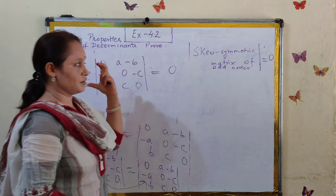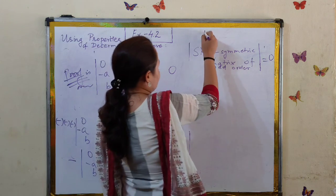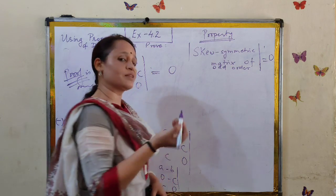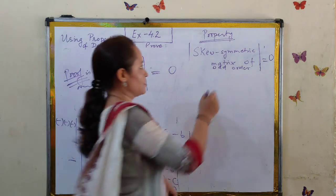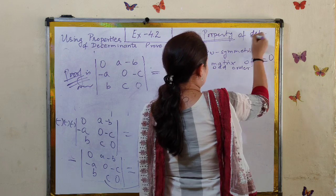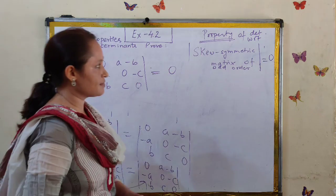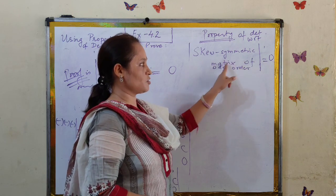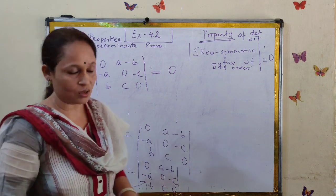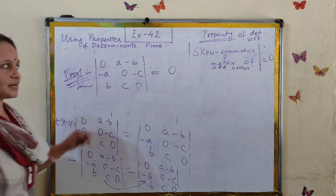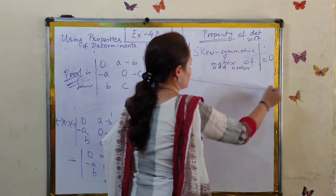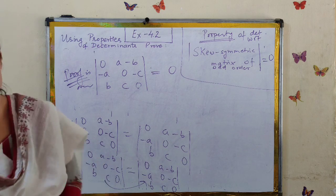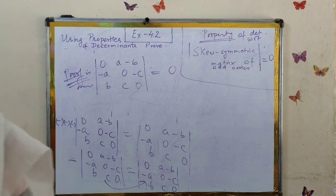This is a property of a skew-symmetric matrix, or rather a property of the determinant with respect to a skew-symmetric matrix. It states that the determinant of a skew-symmetric matrix of odd order is always zero. Note this down, and also try this question in your notebook. We will continue with more questions in the next videos.